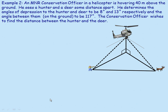In the second example, an MNR conservation officer is flying in a helicopter 40 meters above the ground and sees a hunter and a deer, wanting to know the distance between them. The helicopter is 40 meters off the ground. He determines the angle of depression to the hunter is 8° and to the deer is 13° — the gray lines represent lines parallel to the ground — and he measures the angle on the ground between them as 117°.